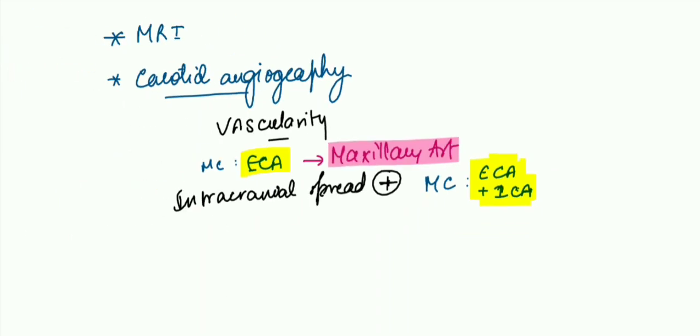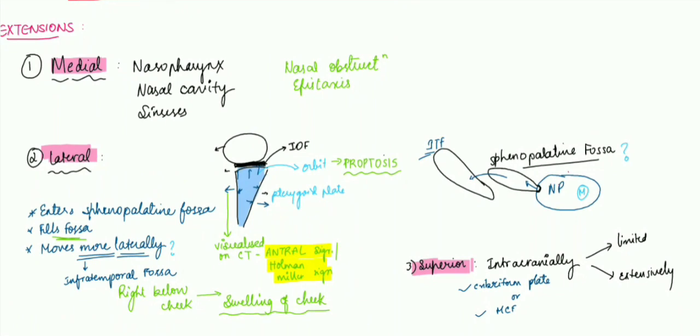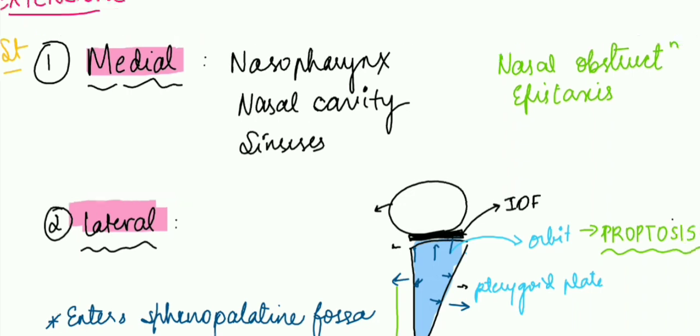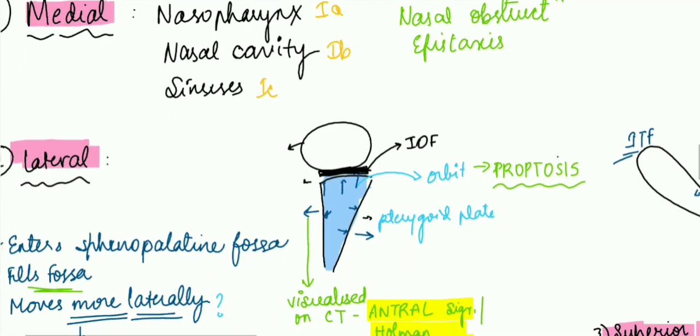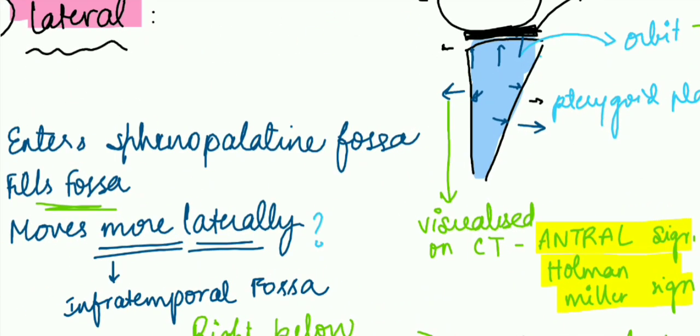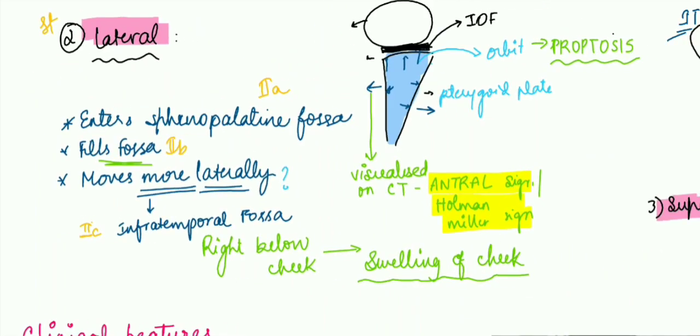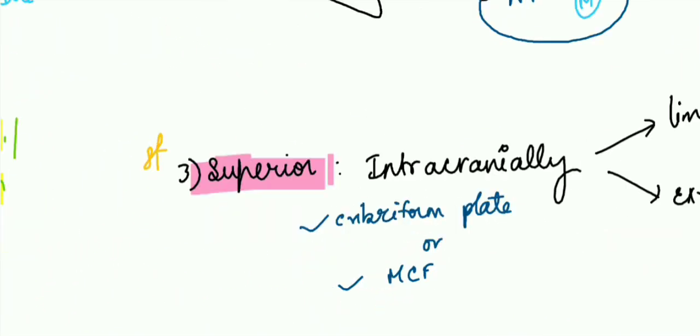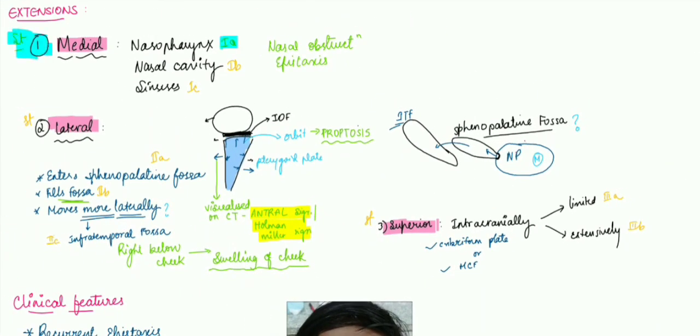That's about the diagnosis. We left a little part, which is the staging of the tumor. It's very simple. This is stage 1, medial extension: nasopharynx is 1a, nasal cavity is 1b, and sinuses is 1c. Then moving on to the lateral, that is stage 2: in case it enters, it is 2a; in case it fills the fossa, 2b; and in case it enters infratemporal fossa, 2c. Then superiorly is obviously stage 3: limited is 3a and extensive is 3b.